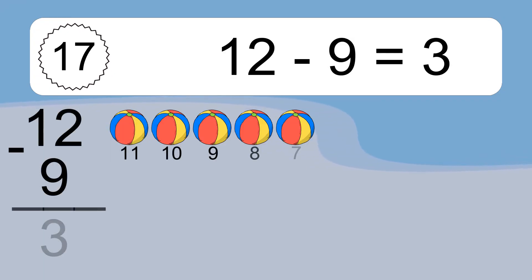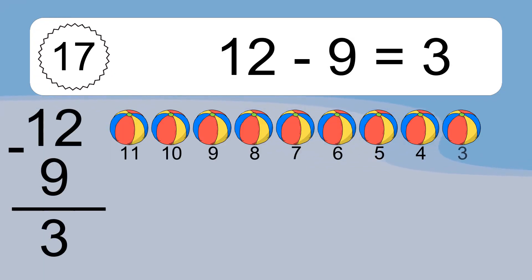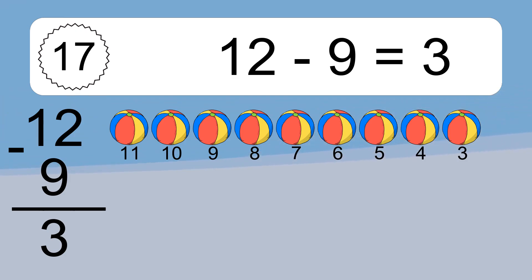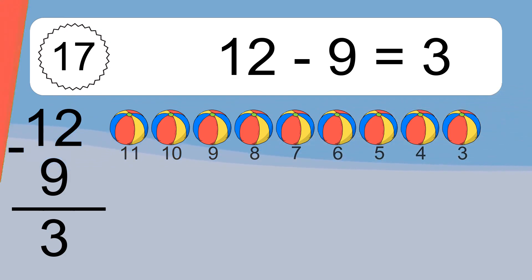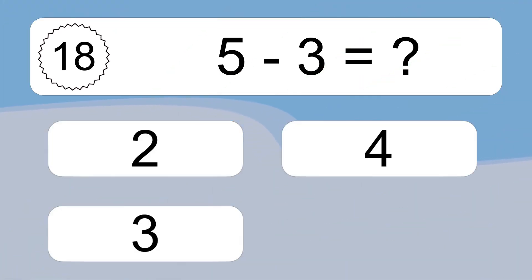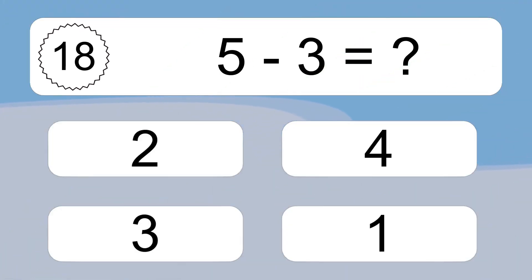12 minus 9 equals what? 12 minus 9 equals 3. Let's count it: 11, 10, 9, 8, 7, 6, 5, 4, 3.